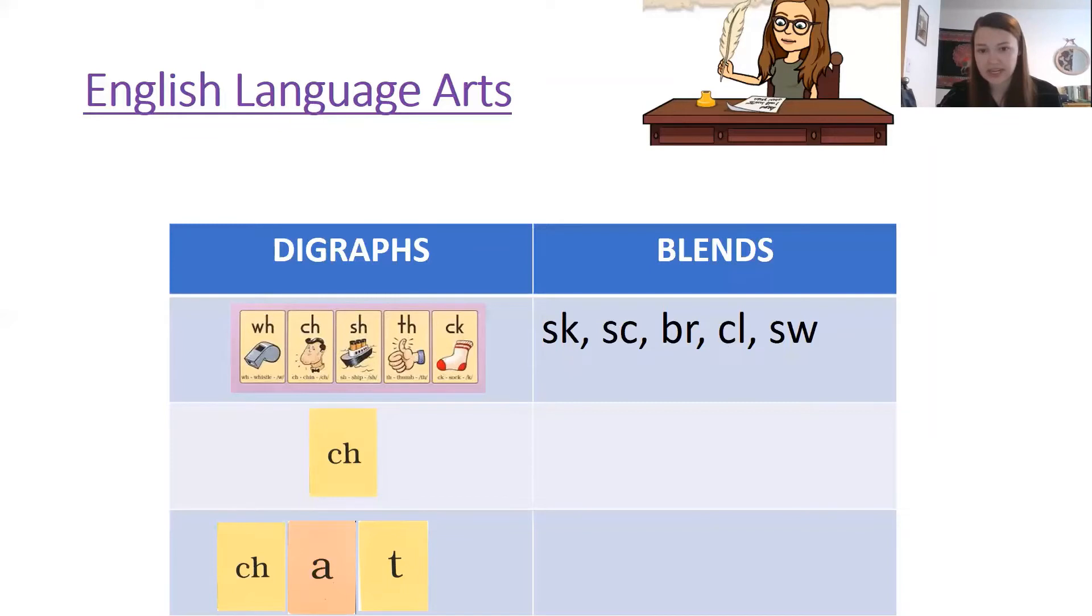So the example that we're going to use today, S and K here are both on their own sound cards because we do need to give a tap for each letter in a blend. Okay so here in this word just like in chat there are four letters but each letter is on its own card. So instead of having three cards for four letters we have four cards for four letters which means that this word gets four taps.